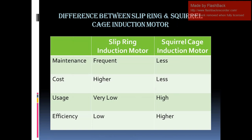Regarding usage, slip ring induction motor usage is very low. While squirrel cage induction motor usage is very high. Only 10% of the induction motors are of slip ring type, while 90% of induction motors are of squirrel cage type.